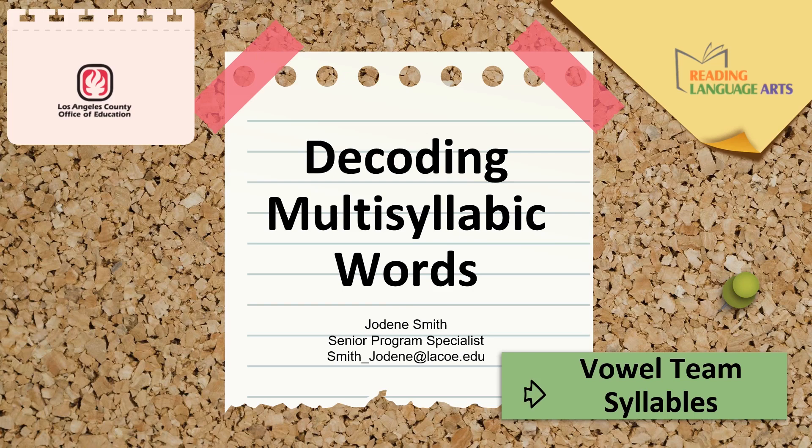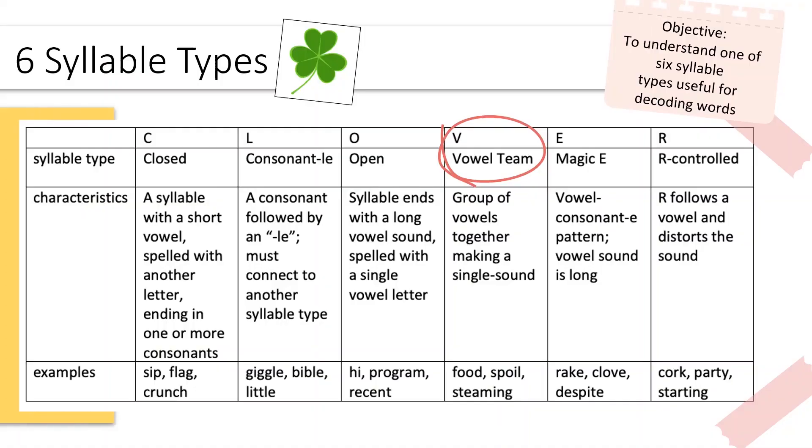I'm so glad you have joined me for this module on decoding words with vowel team syllables. There are six syllable types that are useful for students to learn to help with decoding. The acronym CLOVER is helpful to remember them. Today we will look at one type, vowel team syllables. Check out the other quick modules to learn more about the other syllable types.